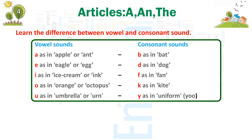Consonant sounds: B as in bat. D as in dog. F as in fan. K as in kite. Y as in uniform — the word 'uniform' begins with the consonant sound 'Y'.